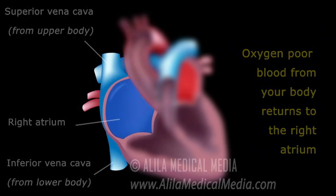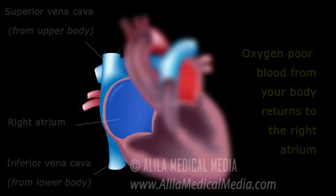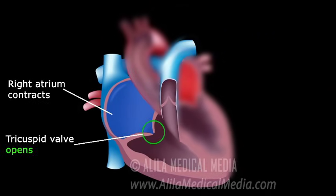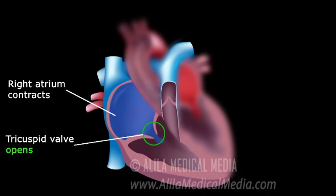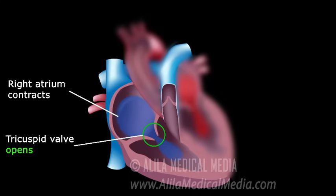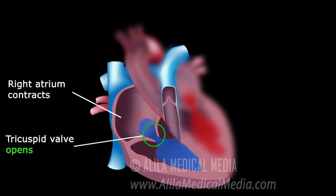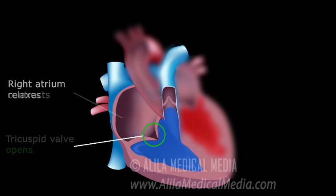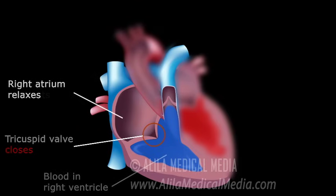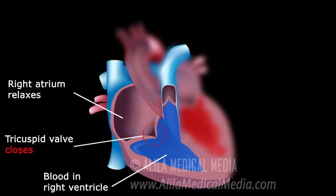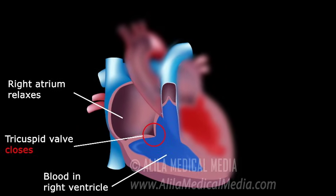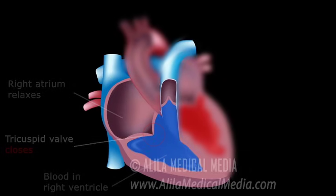As the right atrium is filled with blood, it contracts, the tricuspid valve opens, and blood is pumped into the right ventricle of your heart. When the right ventricle is full, the tricuspid valve closes to prevent blood from flowing back into the atrium.